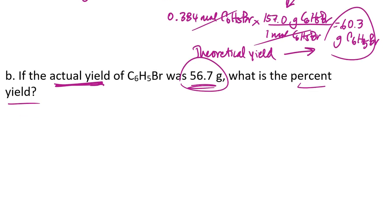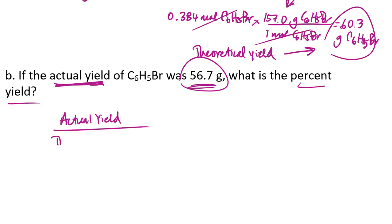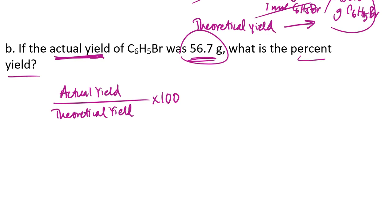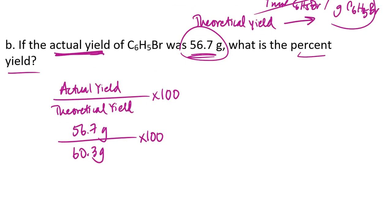So the way to figure out the percent yield is I'm going to take the actual yield, divide that by the theoretical yield, and multiply that by 100. So that would mean I would take 56.7 grams divided by 60.3 grams times 100. And if I do that math, I end up with 94.0 percent yield for this reaction.